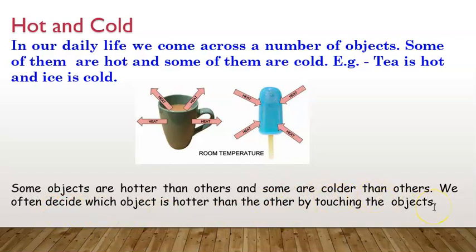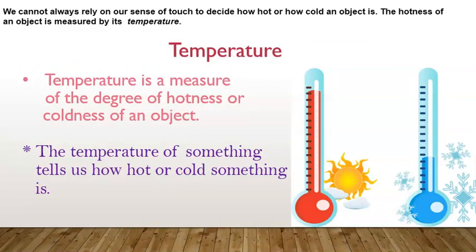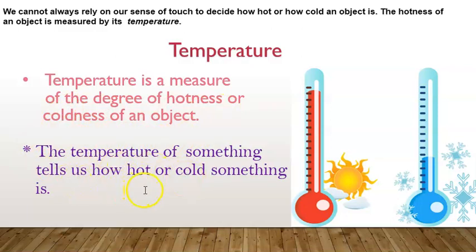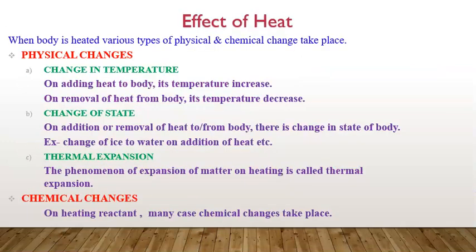Some objects are hotter than other objects and some are colder. We often decide which object is hotter by touching it. However, we cannot always rely on our sense of touch to decide how hot or how cold an object is. The hotness of an object is measured by temperature. Temperature is a measure of the degree of hotness or coldness of an object; it tells us how hot or cold something is.